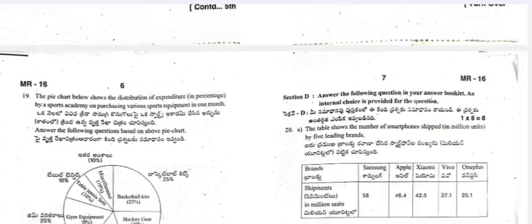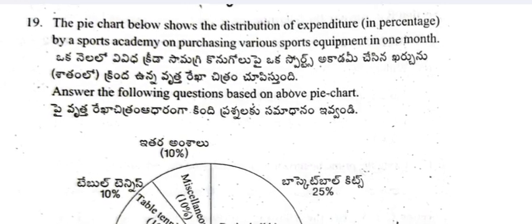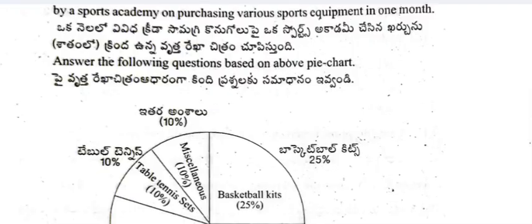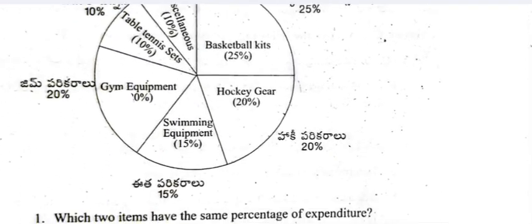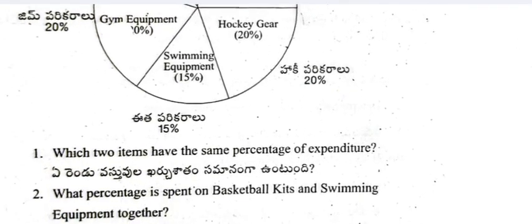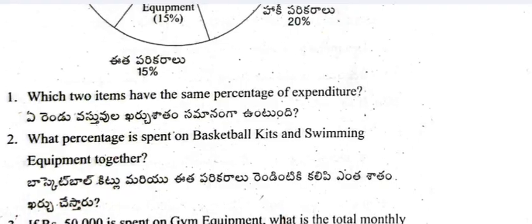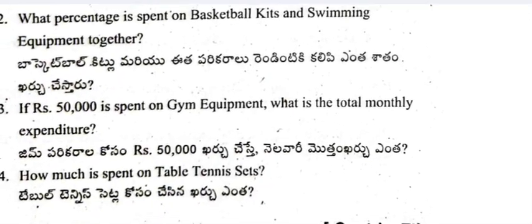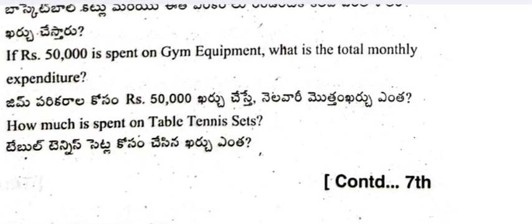Question 19: The pie chart shows the distribution of expenditure in percentage by a sports academy on purchasing various sports equipment in one month. Which two items have the same percentage of expenditure? What percentage is spent on basketball kits and swimming equipment together? If 50,000 rupees is spent on gym equipment, what is the total monthly expenditure? How much is spent on table tennis?